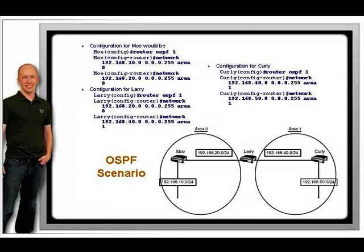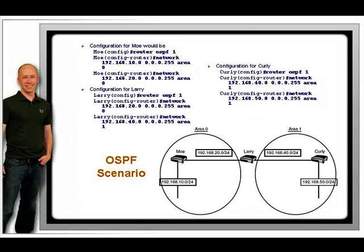Note that you specify a wildcard mask in the configuration. Wildcard masks are used to match the IP address that is being used on an interface. Take a look at this figure where we come across our three friends again — Moe, Larry, and Curly. The wildcard mask used in these statements is matching the IP address on the interface.